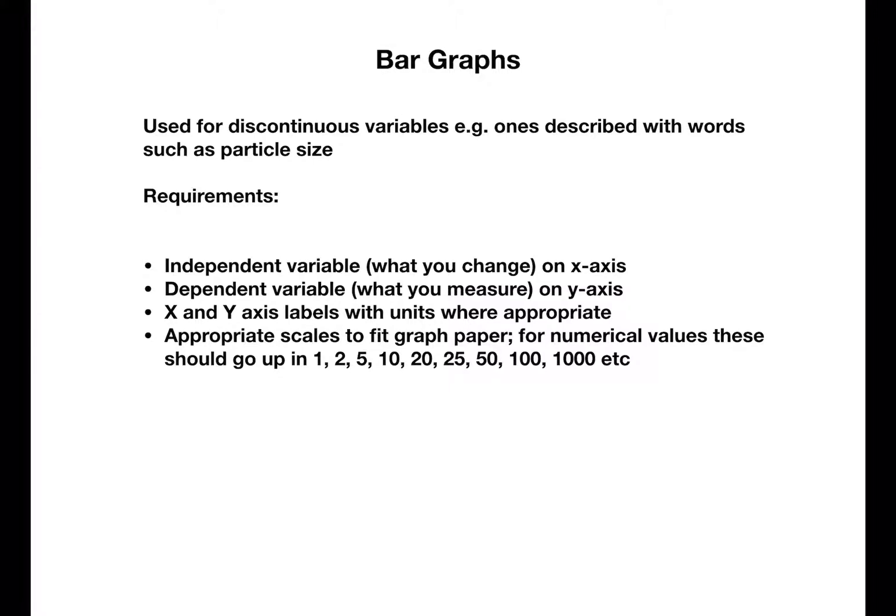The requirements for a bar graph are that your independent variable or what you're changing goes on the x-axis. This will usually be the words. Your dependent variable or what you're measuring goes on the y-axis and this will be numbers. The x and y-axis should have labels with units where appropriate and they should have appropriate scales to fit the graph paper.